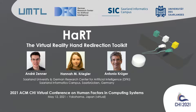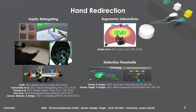Hand redirection is a technique that grants a VR system control over the user's real hand movements during interaction in immersive virtual environments. Leveraging the perceptual phenomenon of visual dominance, hand redirection can decouple the user's real hand motion in physical space from the virtual hand motion in the virtual environment. Past research showed hand redirection to successfully improve proxy-based haptic feedback for VR through haptic retargeting. Moreover, hand redirection was shown to be a suitable approach to provide improved ergonomics of 3D user interaction.